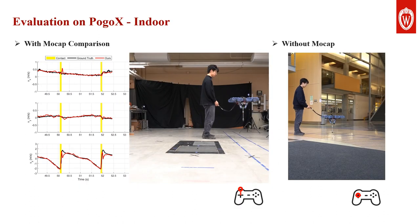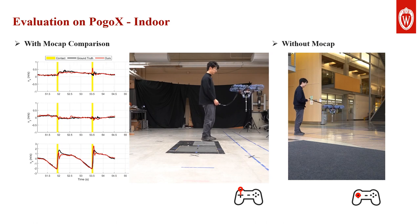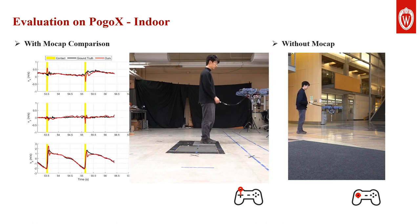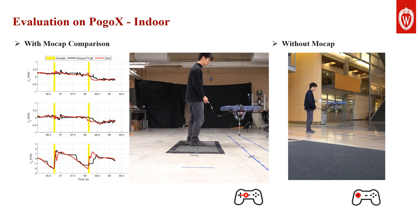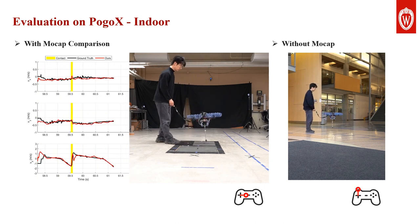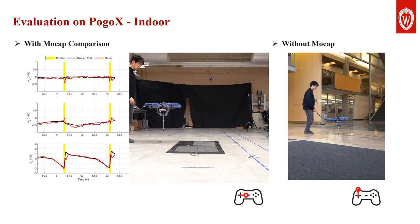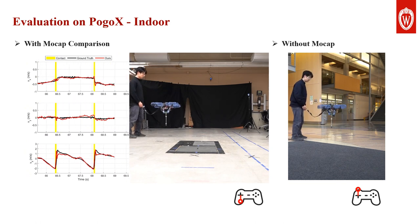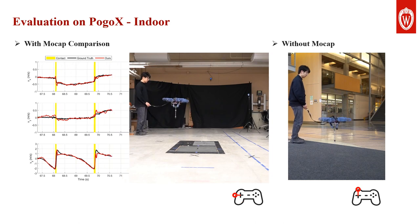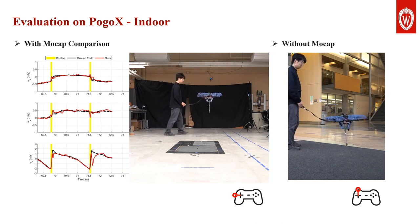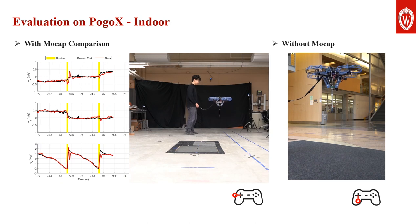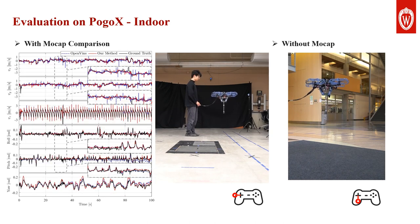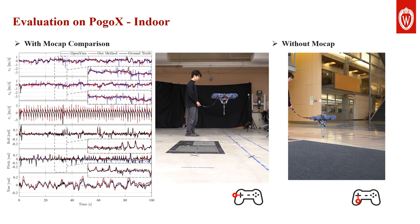Indoor experiments have demonstrated the effectiveness of the proposed estimator. The POGO-X robot is controlled using results from onboard estimation. The plot shows that our estimator has reasonably better performance compared with the widely used VO-based open-source methods.